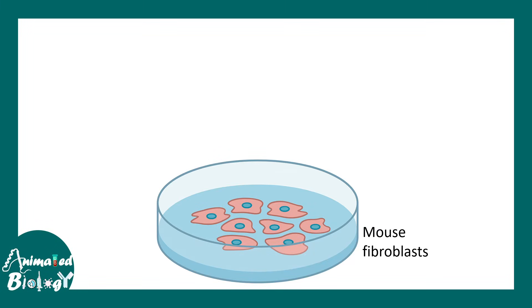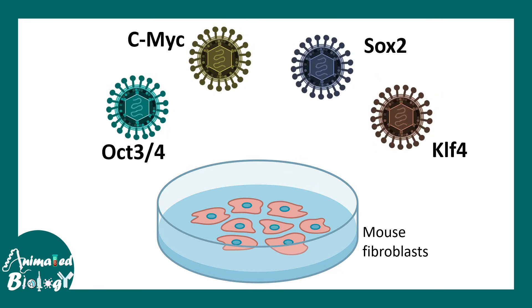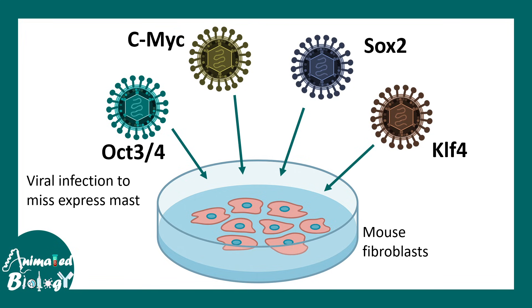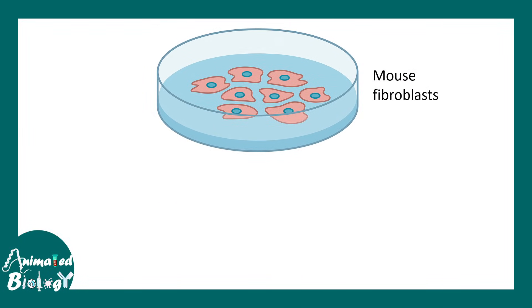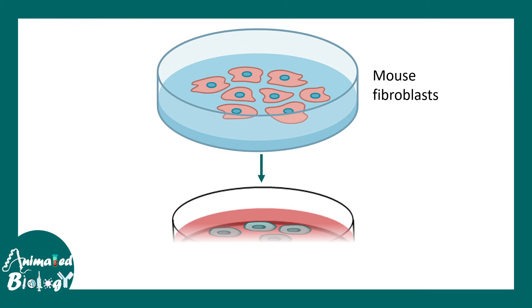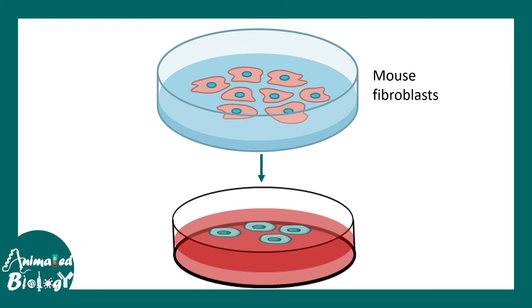In the first experiment, mouse fibroblasts were used and viral transduction of the factors OCT3/OCT4, c-MYC, SOX2, and KLF4 was performed. After the transduction process, these transcription factors were misexpressed — they are not normally present in mouse fibroblasts but were artificially expressed in those cells.